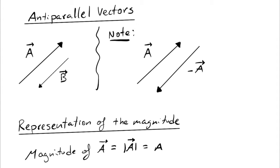Now, how do we represent the magnitude of a vector? The magnitude of a vector is represented by using the same symbol for the vector but with vertical bars on both sides, or by using the letter only but with no arrow on top. For example, the magnitude of a is written with vertical bars or just the symbol — that is the representation of the magnitude of the vector.